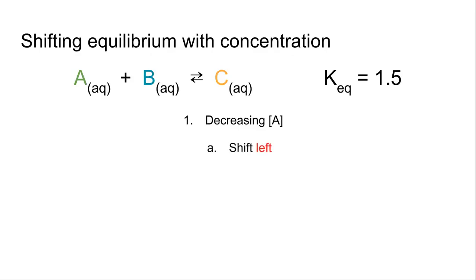So in that case, we're going to shift to the left because if we have a lack of A, then C is going to make A and B more to increase that amount of A. So we call that a shift to the left.